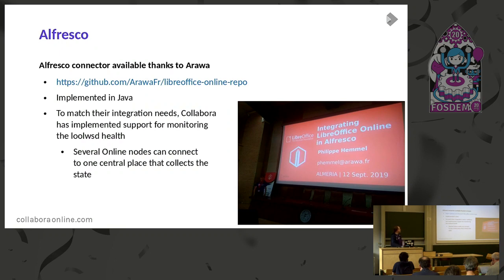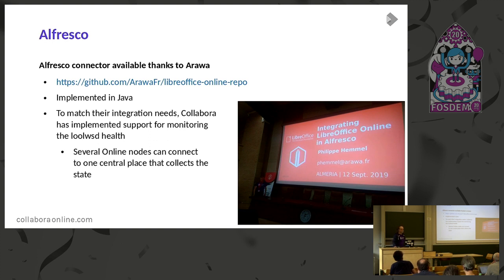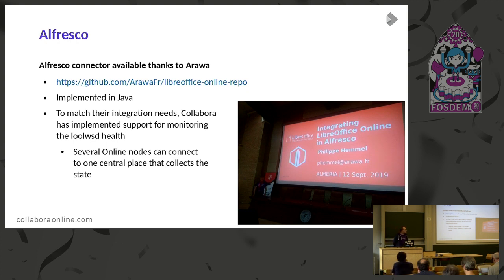The first integration is Alfresco, a document management system. The Alfresco connector was made available by Arava and is fully implemented in Java. They had a specific requirement: they had multiple nodes running Collabora Online and needed a central monitoring system. We implemented that for them. In the configuration file, you can set a log server that collects status messages from individual nodes, and the server aggregates this information into a central place.